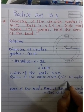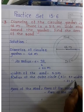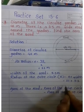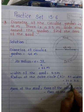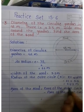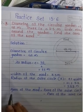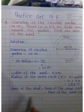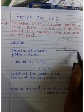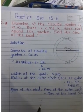Area of the road equals area of the outer circle minus area of the inner circle.